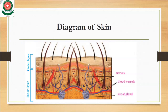This is the diagram of the skin, which contains the nerves, blood vessels, and sweat glands. It consists of two layers: the inner layer and the outer layer.